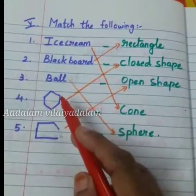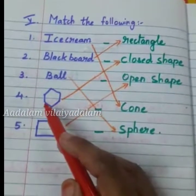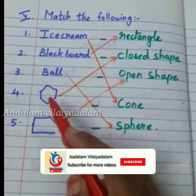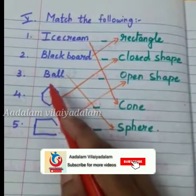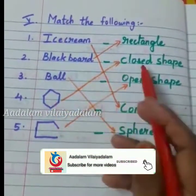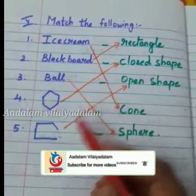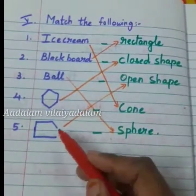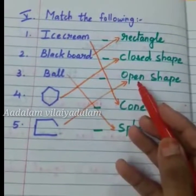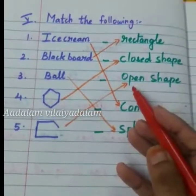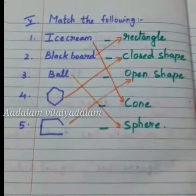What shape is this? It is closed — no opening anywhere — so it is a closed shape. Here it is a little open, so it is an open shape.